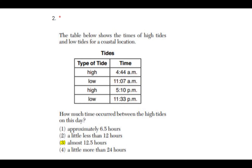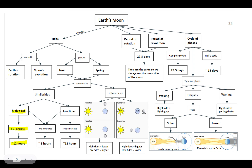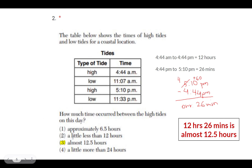Number two: the table below shows the times of high tides and low tides for a coastal location. How much time occurred between the high tides on this day? The correct answer is three, almost 12.5 hours. This is because if you go to your Regents Review packet page 25, you'll see that the time difference between two high tides is around 12 hours.